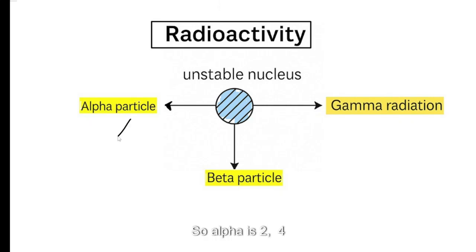So alpha is alpha 2,4, beta radiation, beta minus, there are two types as plus and minus but in GCSEs you can just consider that to be beta minus and gamma radiation is like that.